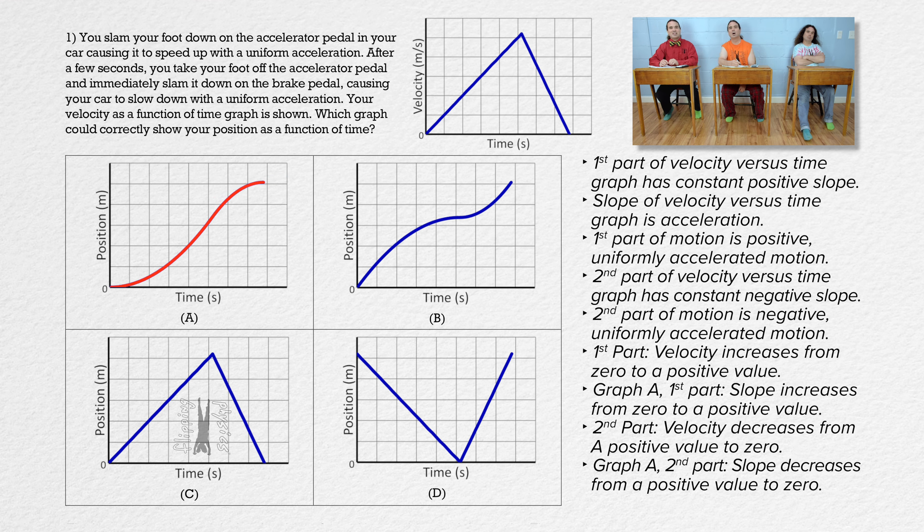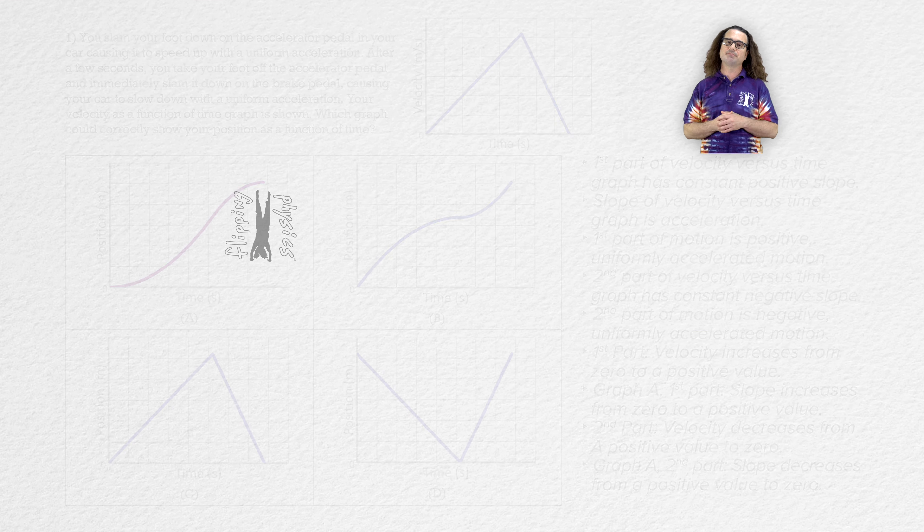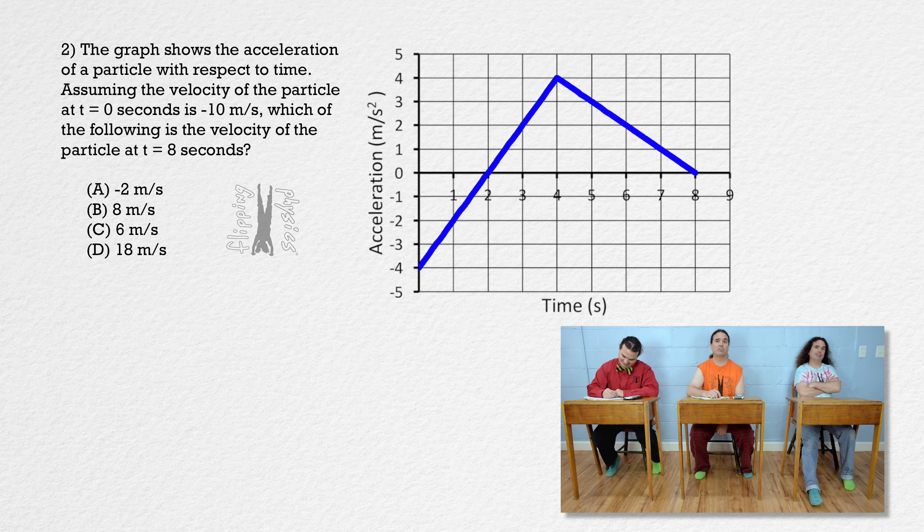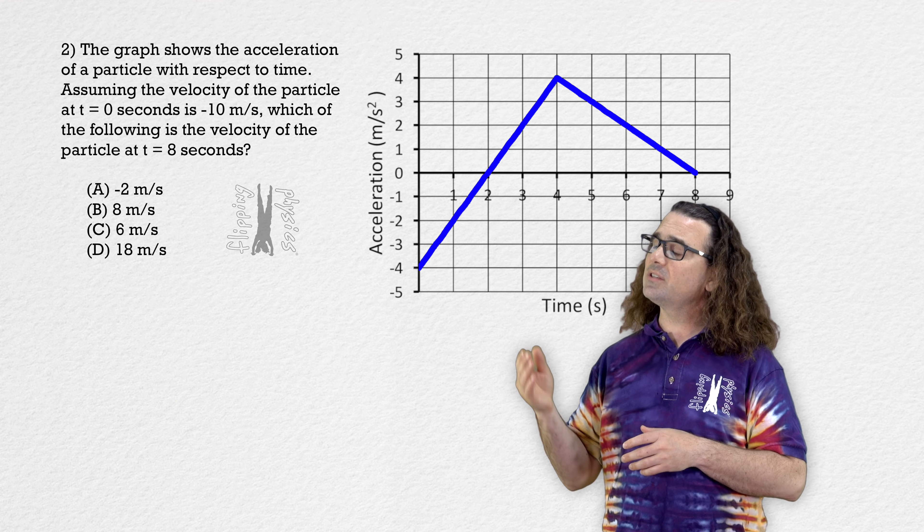The whole position versus time graph for choice A matches the given velocity versus time graph. Thank you, Billy. Bobby, please read the next question. The graph shows the acceleration of a particle with respect to time. Assuming the velocity of the particle at t equals zero seconds is negative 10 meters per second, which of the following is the velocity of the particle at t equals 8 seconds? Please solve this problem.